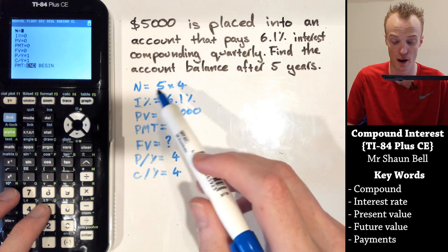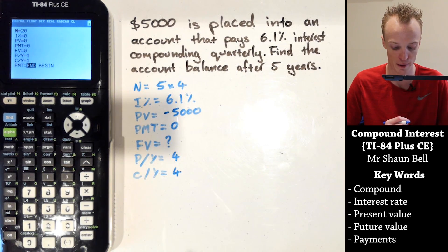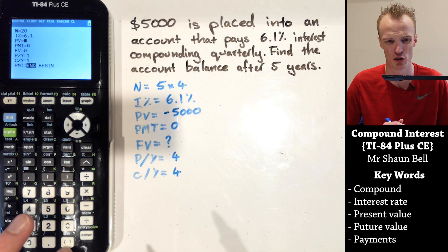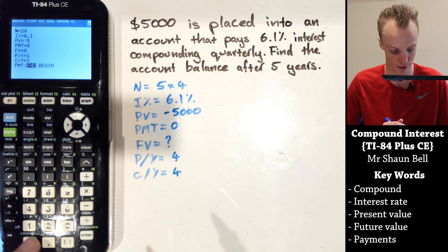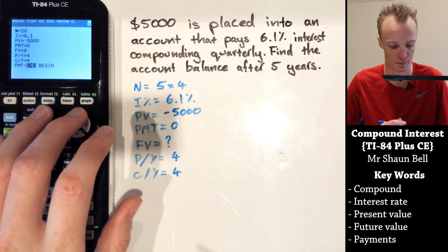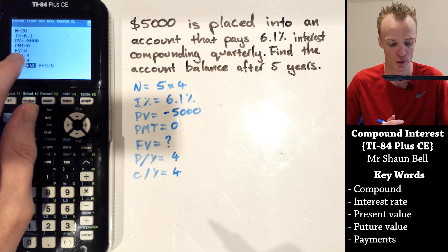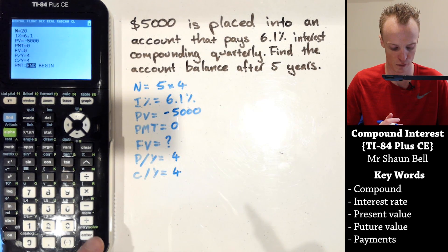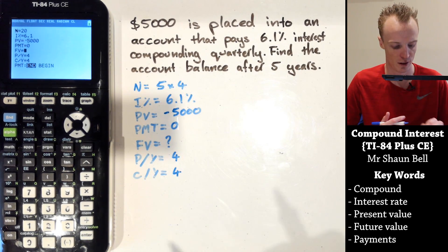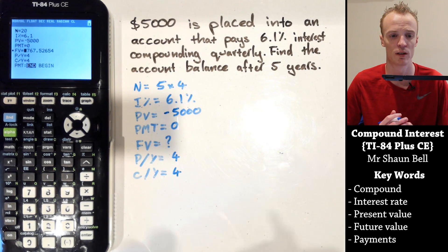Now input this into the calculator. You can enter five times four and the calculator will multiply it out to 20. Enter 6.1 for the interest rate. For PV, make sure you use the negative button — negative 5,000, because we're putting money into the account. Payments per term is zero. Leave future value at zero for now. Payments per year and compounds per year are both four. Move your cursor to highlight FV, then press Alpha and Enter — the green Solve — to calculate it.